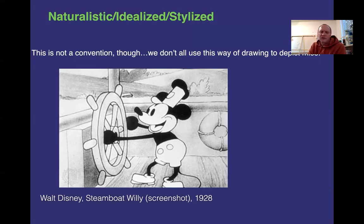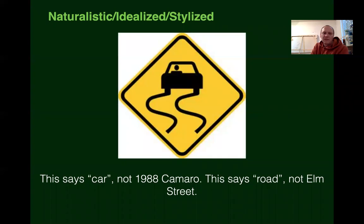Stylization is not a convention though — we don't all use this way of drawing to depict something. Stylizations are different from one another, but we can still see what they are. Like a road sign — this says 'car,' not '1988 Camaro.' This says 'road,' not 'Elm Street.' So the sign symbolizes something — it says car in a generic way, but with just enough detail that we understand it as car, without enough detail to understand what kind of car it is.